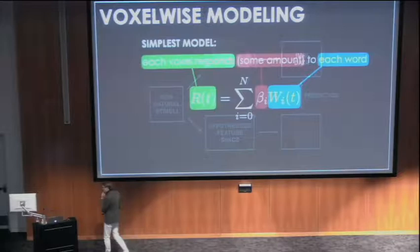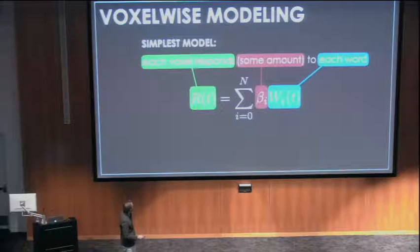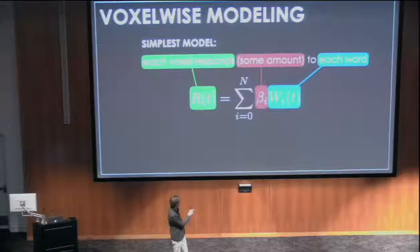I'm going to start with the simplest possible model we could fit to this data, summarized as: each voxel responds some amount to each word. Every time you hear a specific word, this voxel is going to change its response by some amount beta. Say the word is penguin — there's some voxel with a weight of 0.5 for the word penguin. Every time you hear penguin, that voxel responds 0.5. We fit one of these weights for every individual word. The voxel time course is going to be a sum of these word indicator variables multiplied by these weights. In this framework, the hypothesized feature space is the words.